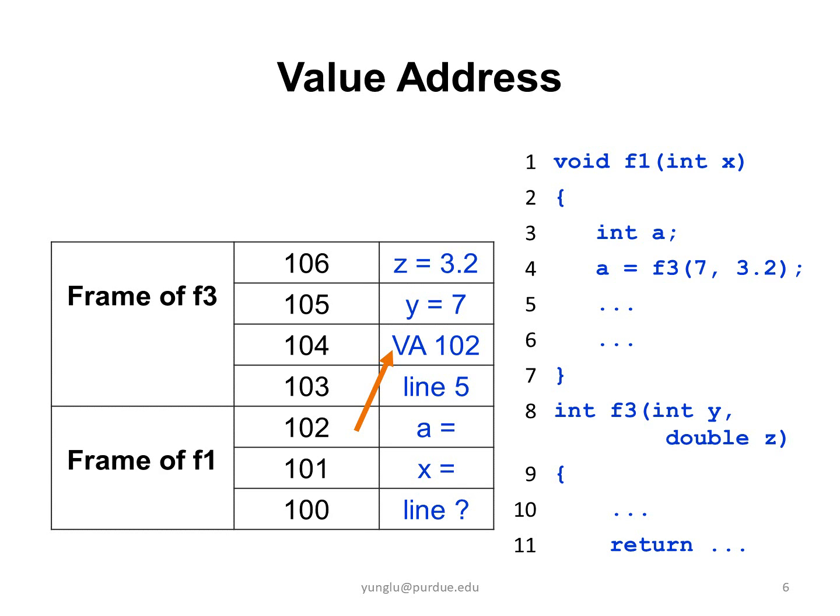Its frame contains the return location of the line number after F1 is called. The argument X has a value assigned by the function where F1 is called. Function F1 has a local variable A. Function F1 calls function F3 and the value returned by function F3 is written to A. The address of A is stored in the frame of F3.